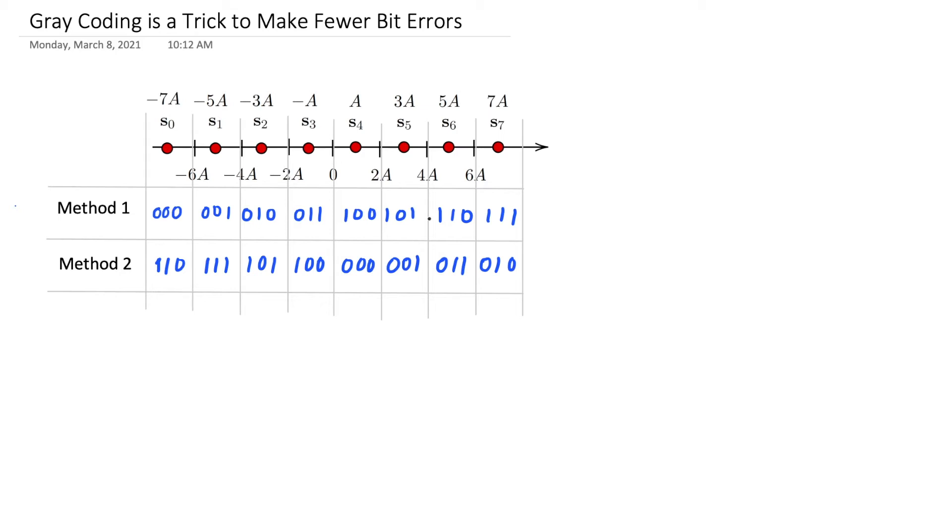In method 1, I'm going to just number them as if I was converting from the symbol number in decimal to a 3-bit string in binary. So from 0, I'd have 0, 0, 0. From 1, I'd have 0, 0, 1. And so on, all the way up to 1, 1, 1 for symbol 7.